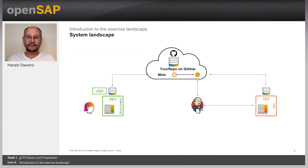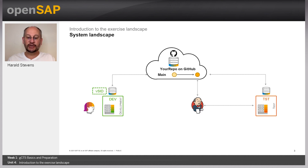The overall picture of our landscape looks like this. We have two S4 HANA systems, DEV and TEST, and we connect them for the GCTS exercises to a central GitHub repository. In the last week we will additionally use Jenkins as a CI server to run pipelines for the exercises.